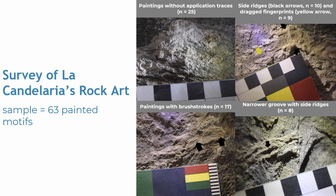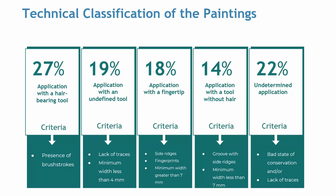The traces were similar to those obtained in the lab experimentation. Nevertheless, another kind of trace on the paintings was recorded in 8 motifs. It consisted of a groove with side reaches, like those observed in the fingerprint application, but narrower. Also, average minimum widths for each motif were measured and results ranged from 1 to 12 mm.